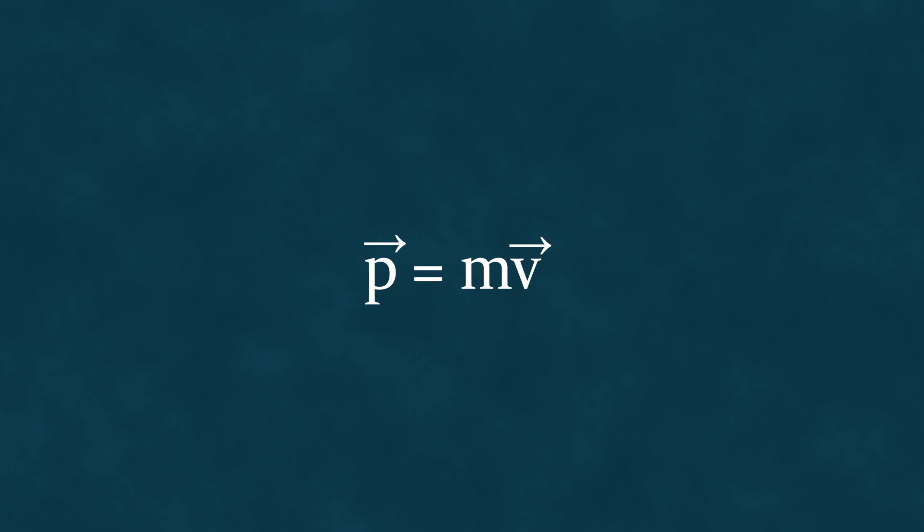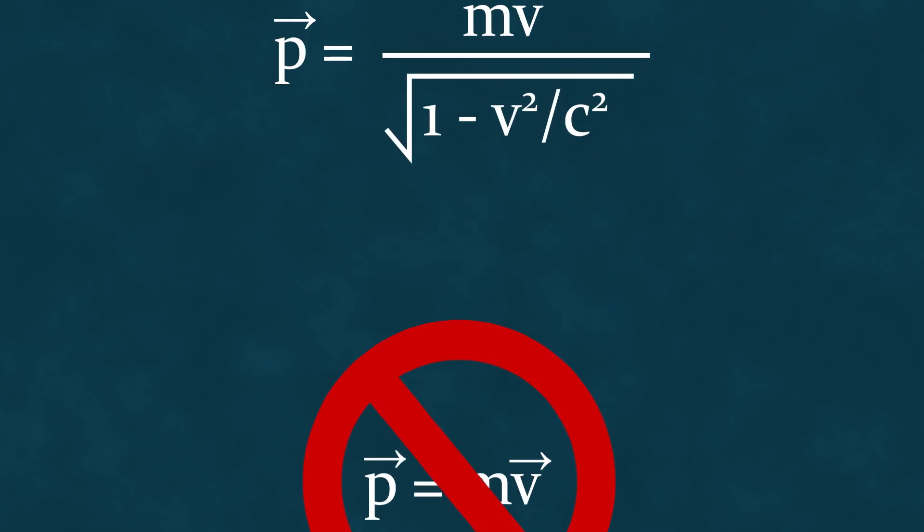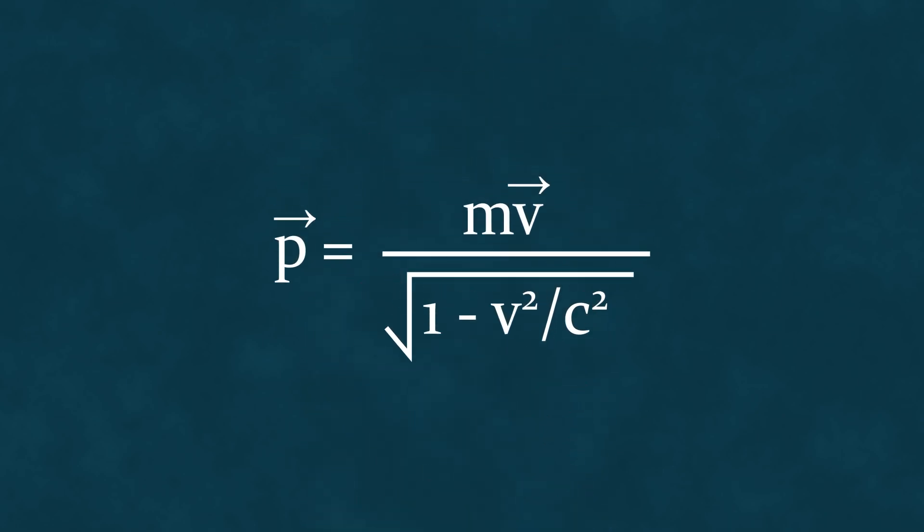In classical mechanics, I remind you, we used to write the following formula for an object's momentum. However, in reality, this familiar school formula is incorrect, or rather, it works only for low velocities. In the general case of arbitrary velocities, including very high ones, we need to use the following formula, in which momentum depends on velocity in a somewhat more complex way. At low speeds, the ratio v divided by c, and especially the square of this ratio, is a very small number, which can be considered equal to zero, and we obtain the familiar school formula.